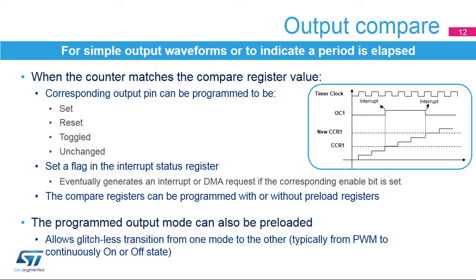This slide presents the output compare features. A compare event is generated when the counter matches the value of the compare register. This event can trigger an interrupt or DMA request and can be reflected on the corresponding output pin by an output set, output reset, or output toggle. The compare register can be preloaded; the preload must be disabled if multiple compare values must be written during a counting period. For applications with real-time constraints, preload mode is preferred since it gives a higher time margin for the software to update the compare register. The output compare mode can also be preloaded to allow glitchless transition from a PWM mode to a forced on or off state.